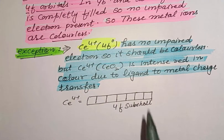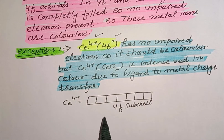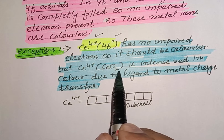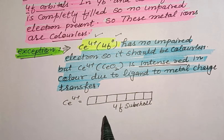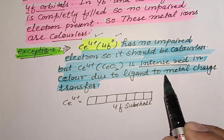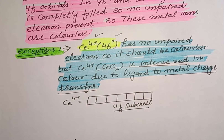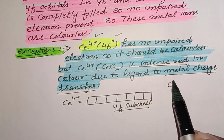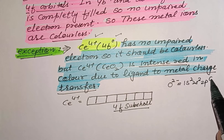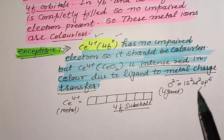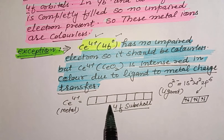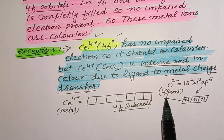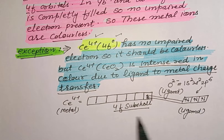Since cerium(+4) has an f⁰ configuration, cerium dioxide (CeO₂) should be colorless — but CeO₂ or Ce⁴⁺ is actually an intense red color substance. This is due to ligand-to-metal charge transfer (LMCT). In CeO₂, the 4f subshell of Ce is completely empty, while the oxide ligand O²⁻ has the configuration 1s² 2s² 2p⁶ — all orbitals filled with electrons. Since the ligand is electron-rich and the metal's f subshell is empty, the ligand transfers its electron density to the metal, causing the intense red color.